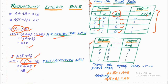After putting in the A and B values, we get A plus B outputs. For the first rule, the LHS A plus A-complement B gives 0, 1, 1, 1 and the RHS A plus B also gives 0, 1, 1, 1. Similarly, the second rule A into (A-complement plus B) equals AB is proved from the truth table. That covers everything about the Redundant Literal Rule. If you like the video, please hit the like button and subscribe to my channel.